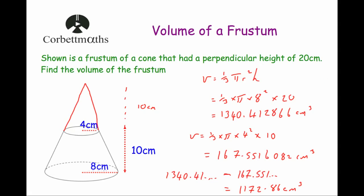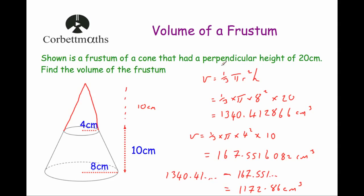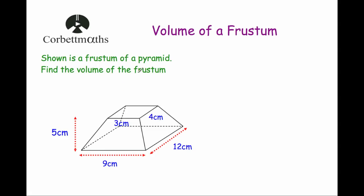Now this question is going to be a bit trickier. We have got this time the frustrum of a pyramid. We have got a pyramid that has been chopped, and this shape here is what's left. It says: work out the volume of this frustrum. It's a rectangular-based pyramid, because we have nine and 12 as the dimensions of the rectangle on the bottom, and three and four centimetres as the dimensions of the rectangle on the top. It's got a height of five centimetres. This question is harder than the previous one because the previous one told us the height of the cone to begin with, but this one doesn't tell us the height of the pyramid to begin with.